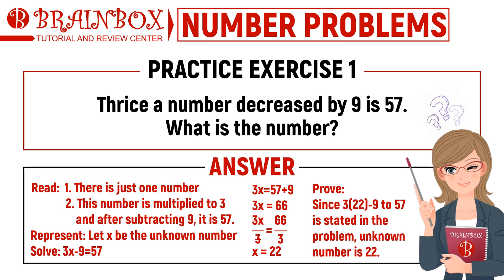Time is up. The correct answer is 22. From this problem we can say two things: one, there is just one number, and two, this number is multiplied by 3 and after subtracting 9 it equals 57. Let x be the unknown number. Relate: 3x minus 9 equals 57. Solve: 3x equals 57 plus 9, so 3x equals 66, therefore x equals 22. Prove: since 3 times 22 minus 9 equals 57, as stated in the problem, the unknown number is 22.